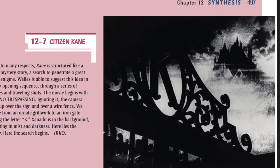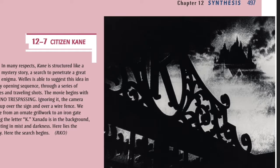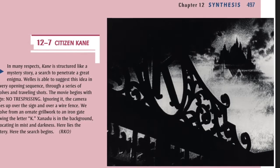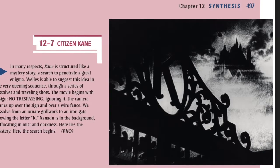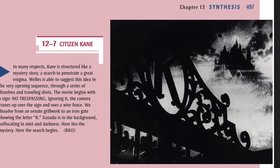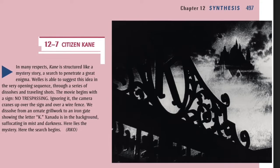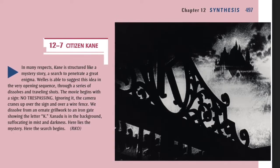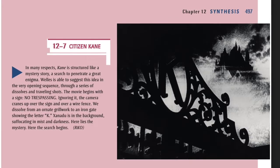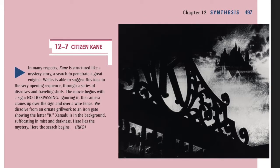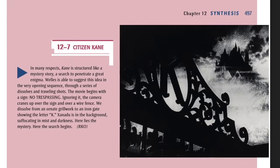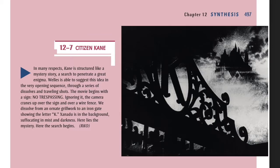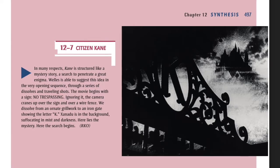12-7: Citizen Kane. In many respects, Kane is structured like a mystery story, a search to penetrate a great enigma. Welles is able to suggest this idea in the very opening sequence through a series of dissolves and traveling shots. The movie begins with a sign: 'No Trespassing.' Ignoring it, the camera cranes up over the sign and over a wire fence. We dissolve from an ornate grillwork to an iron gate showing the letter K. Xanadu is in the background, suffocating in mist and darkness. Here lies the mystery. Here the search begins.